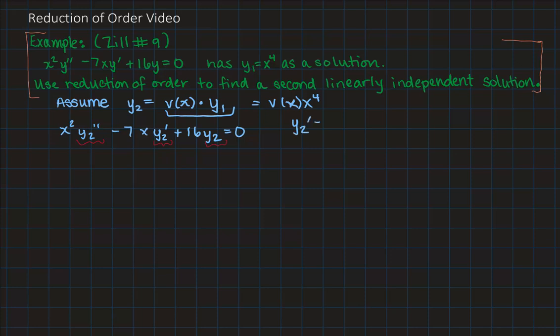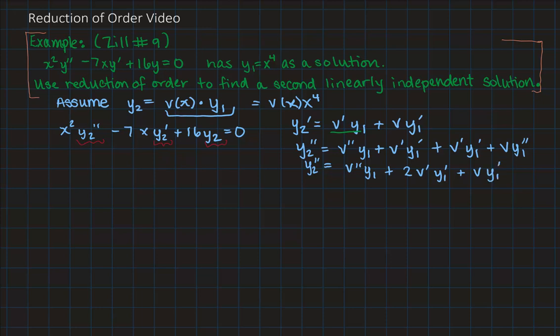So y2 prime by the product rule would be v prime times y1 plus v times y1 prime. And y2 double prime applying the product rule to the first term that's v double prime y1 plus I'm going to keep the v prime the same. So now I'm going to do y1 prime. Now I'm going to go over and look at the second term, the derivative in the second term. If I differentiate the v first I get v prime y1 prime and then I'm going to keep the v and differentiate the second term v y1 double prime. And so you'll notice this happens every time, the y2 double prime is always the second derivative of v times y1 plus two copies of v prime y1 prime plus v times second derivative of y1.